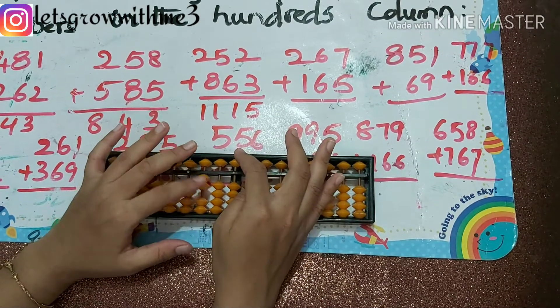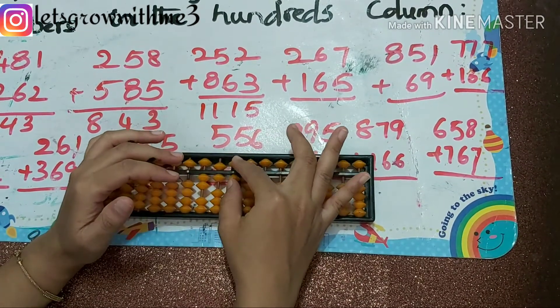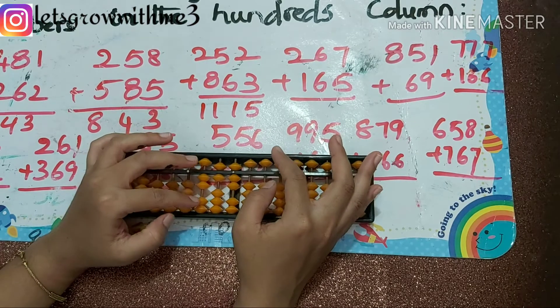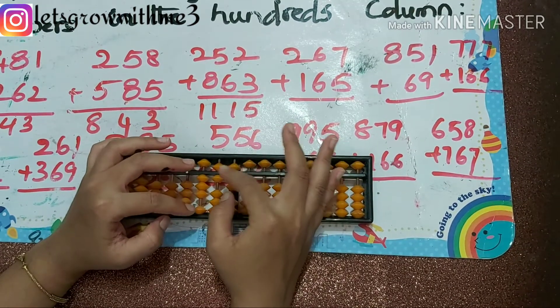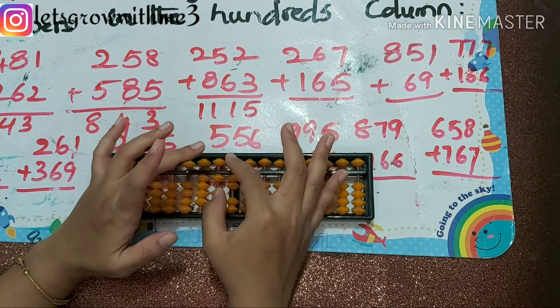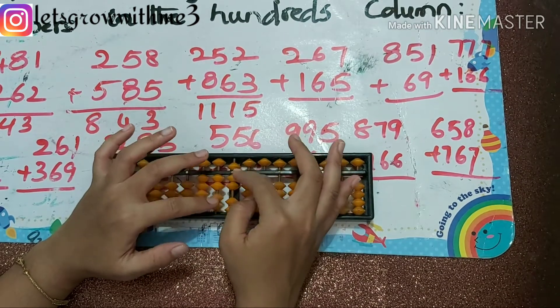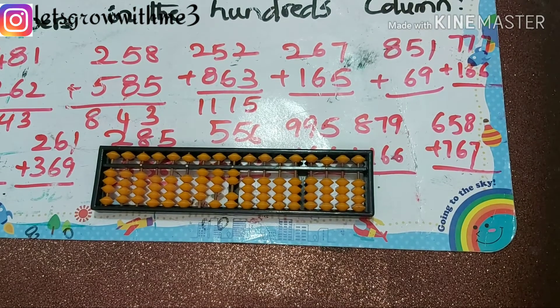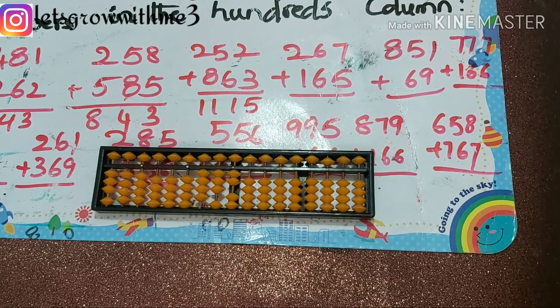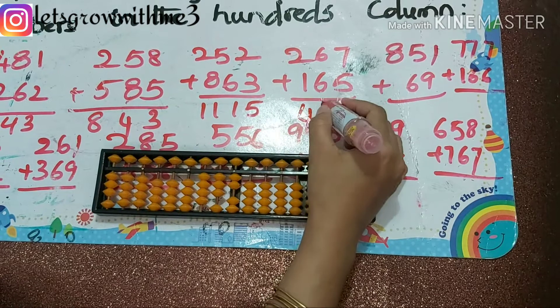Next: 267 plus 165. How to add 6 here? Papa, mama, babies up. Plus 5, plus 10 minus 5. So answer is 432.